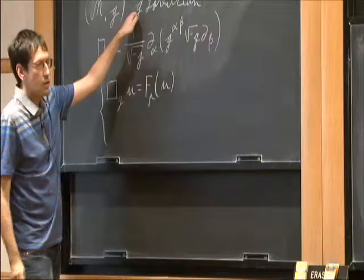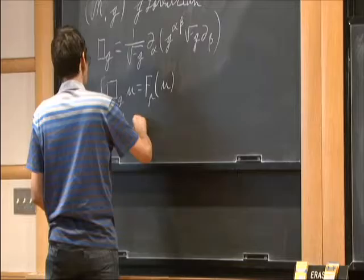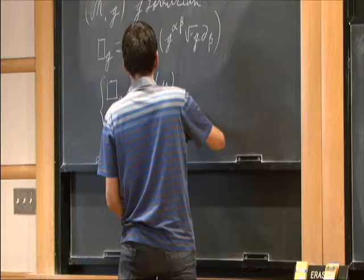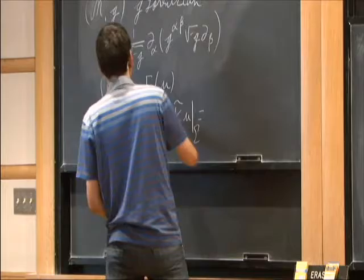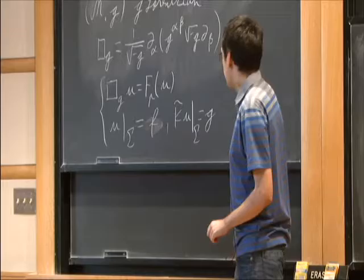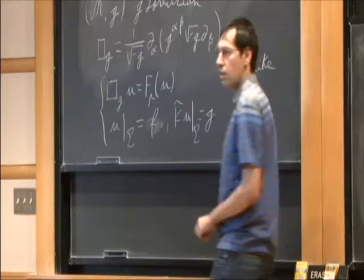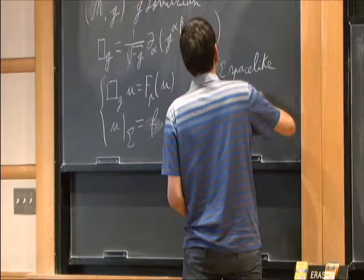Since this is Lorentzian, in order for this to be well-posed, I'm going to say that initially u equals f_0 and k-tilde u equals g, where sigma is some space-like hypersurface. This k-tilde is some sort of time-like vector field.